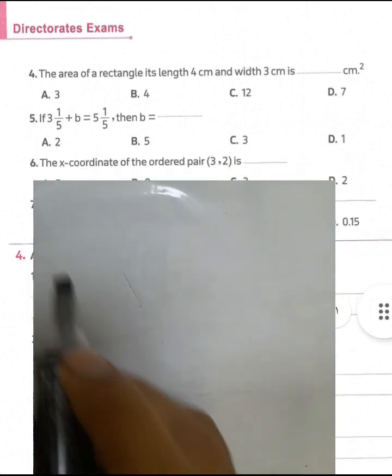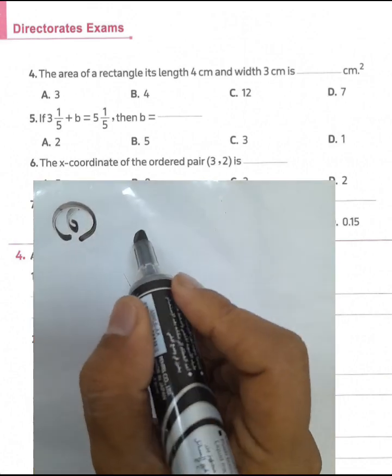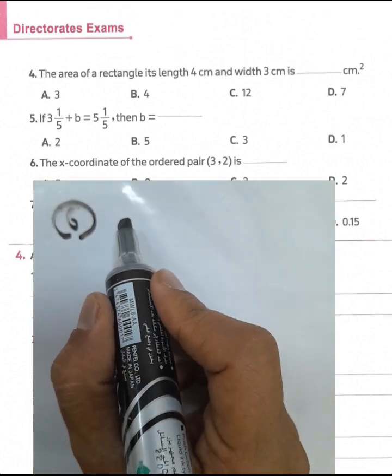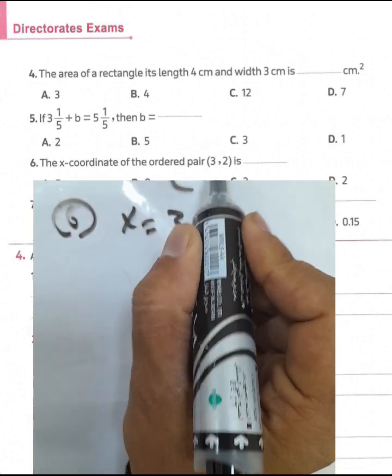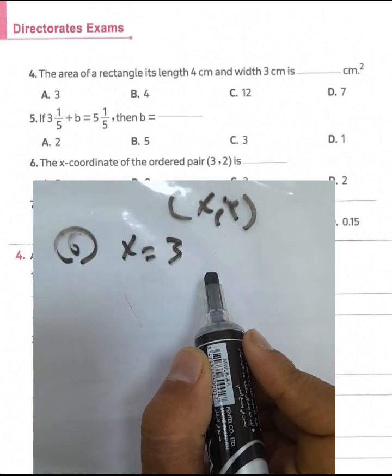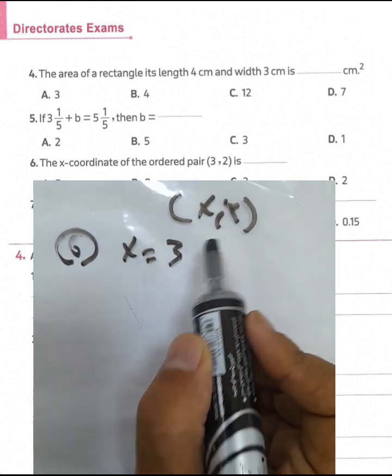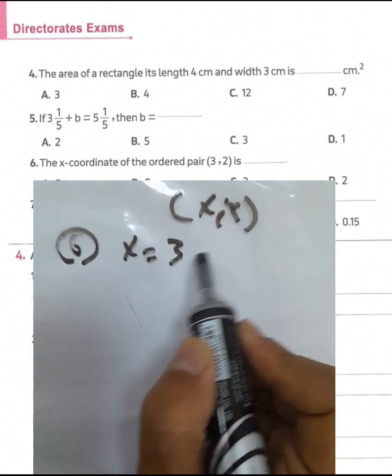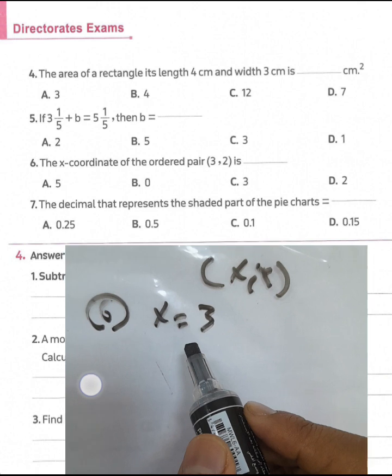Question number 6: the x-coordinate of the given point. X will equal 3, because for any point, the order is (x, y) — the first projection and the second projection. The value of x in this point is 3.